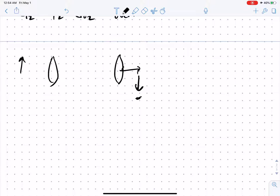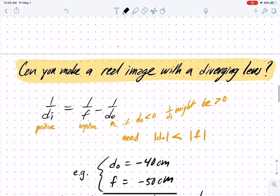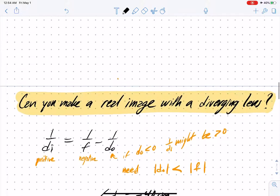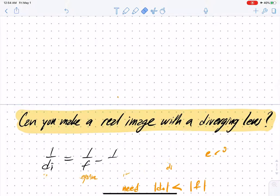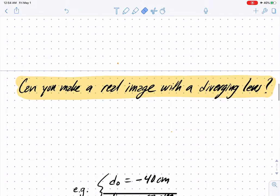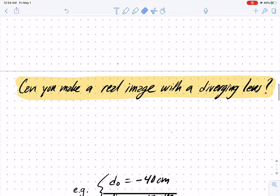Let's see if we can make a real image with a diverging lens. We have the same equation, but the difficulty is that we have a diverging lens, so we know f is negative. This part has to be negative. In order to have a real image, we need this to be positive - the image distance must be positive.